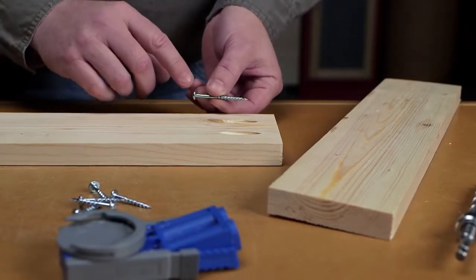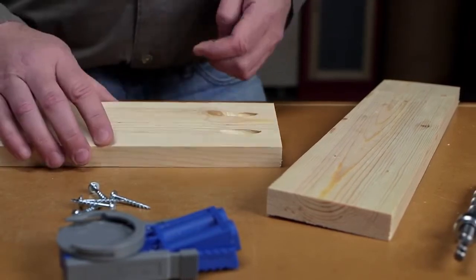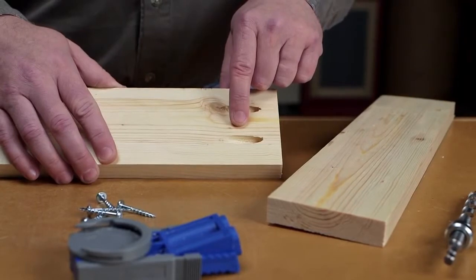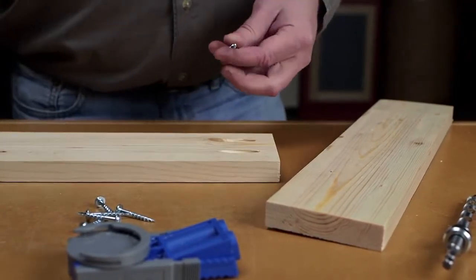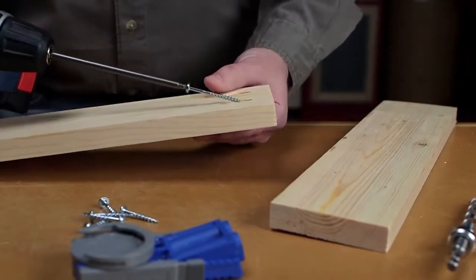Here's a surefire method for choosing the correct length Craig screw without having to refer to a chart. After drilling a pocket hole, which you can do in your work piece or in a scrap piece that's the same thickness, just drive in the screw you intend to use until it's seated in the pocket.